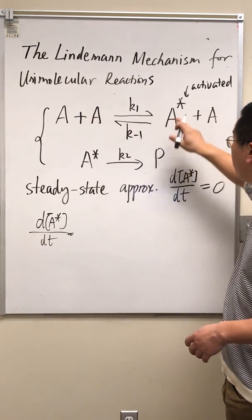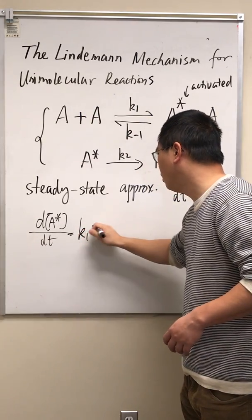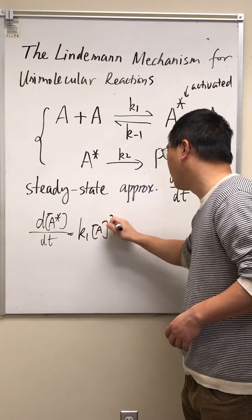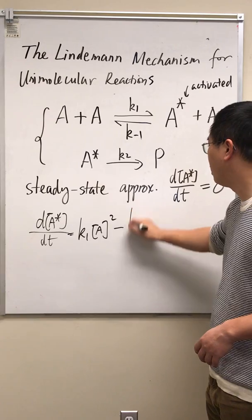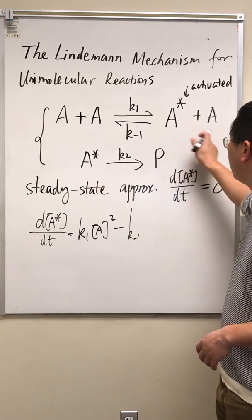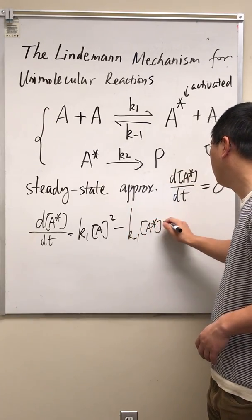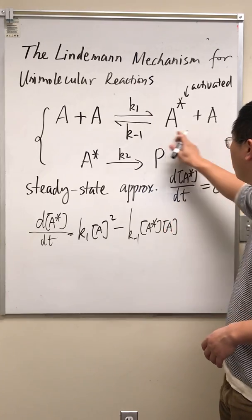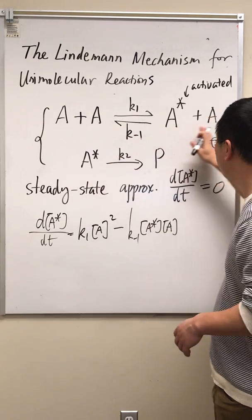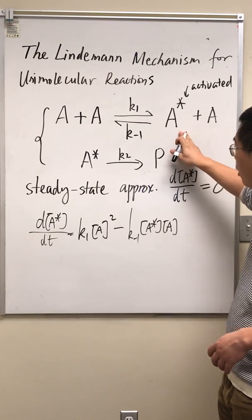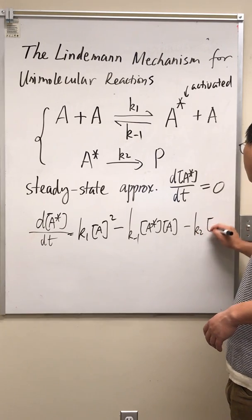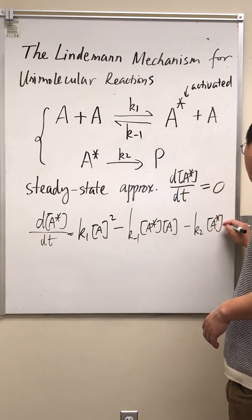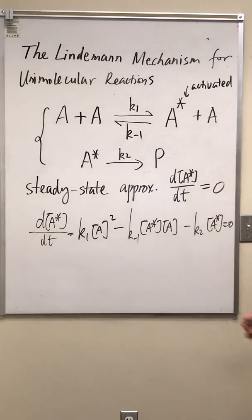So, we'll look at this A star. It's involved in this forward reaction. It's produced in the forward reaction here. It's consumed in the backward reaction. So I'm going to put a minus sign here. K negative one, A star, times A. For the backward reaction, the reactants are A and A star. Over here, A* is consumed. So another negative sign here. Negative K2 times A star. And we'll assume this is zero using the steady state approximation for A star.